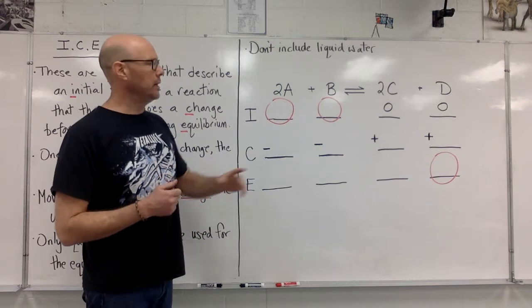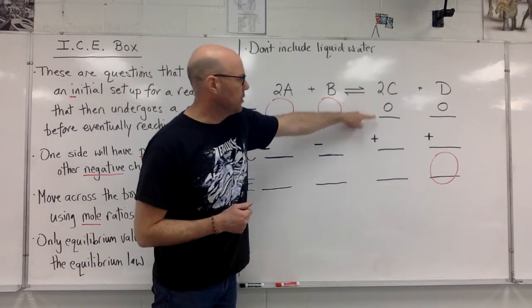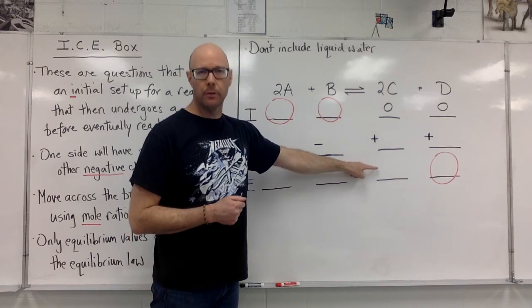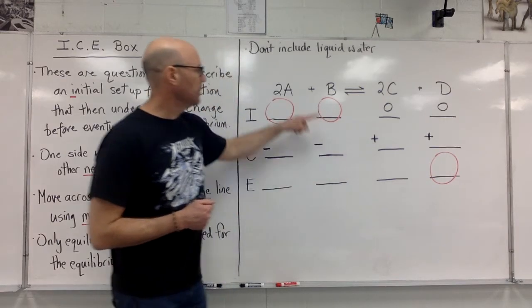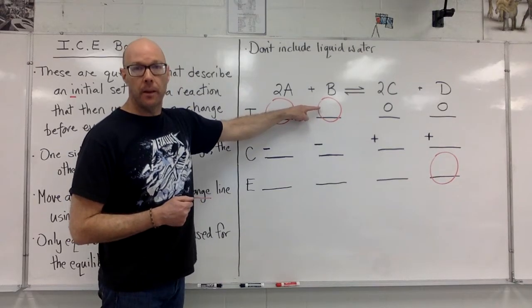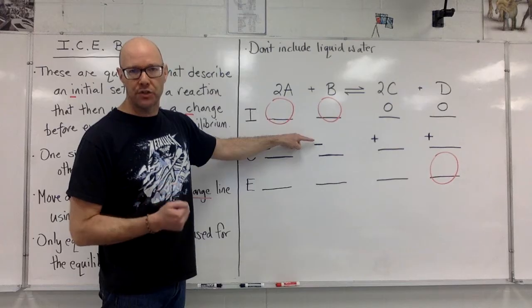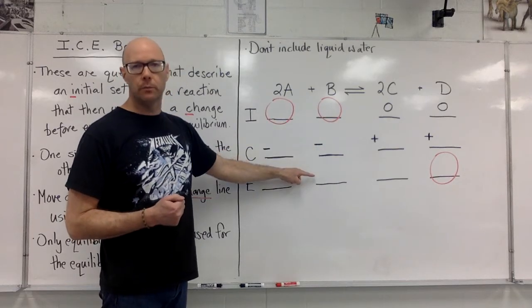What we're going to end up doing then is having this zero add that value to it to arrive at the equilibrium concentration. This number that we will get from the question, we're going to subtract the change from it to arrive at the equilibrium concentration.